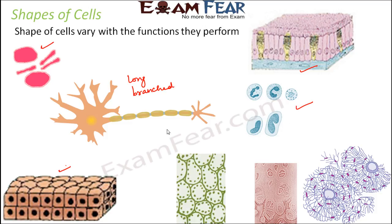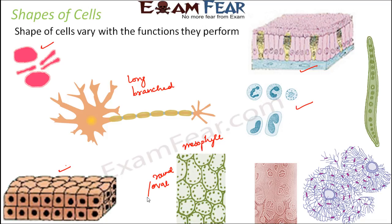If you look at mesophyll cells, which are present in the leaves of plants, they contain the main pigment responsible for the process of photosynthesis. These mesophyll cells are mostly round or oval in shape. If you look at tracheids, these are also elements of plants — they are elongated cells, quite long, with tapering ends on both sides.